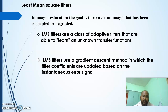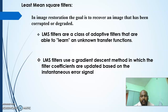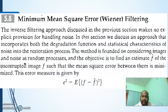The Least Mean Square filter belongs to a class of adaptive filters that are able to learn unknown transfer functions. It uses a gradient descent method in which the filter coefficients are updated based on the instantaneous error signal. Alternate names for this filter are Wiener filtering or minimum mean square error filtering.